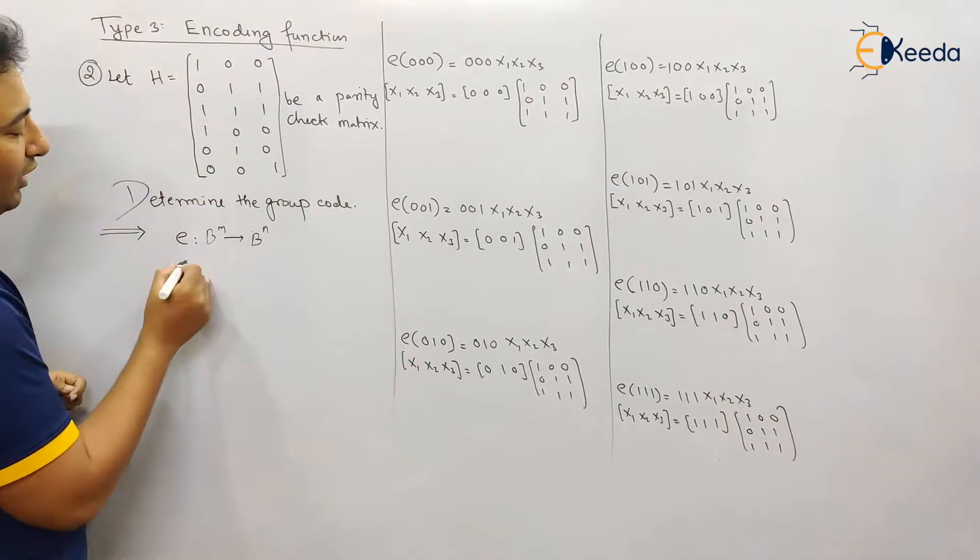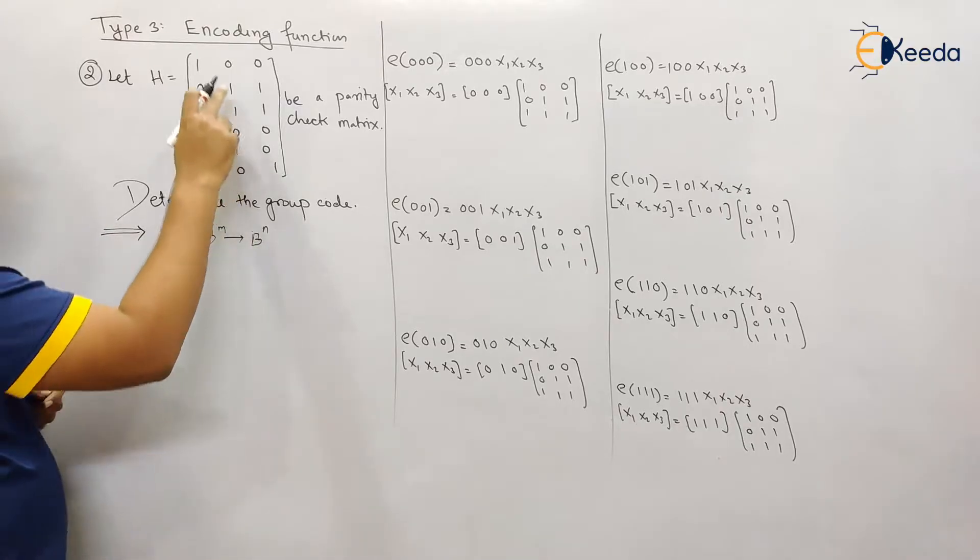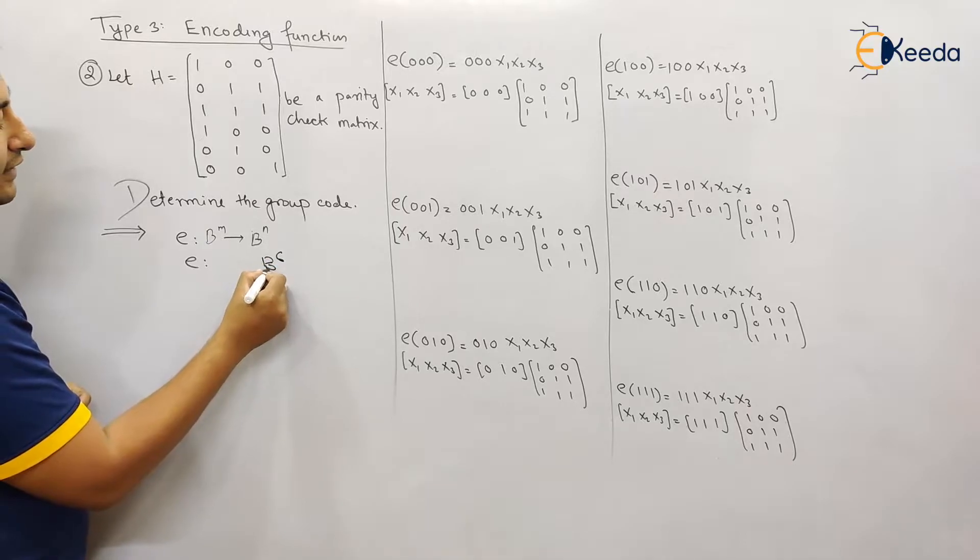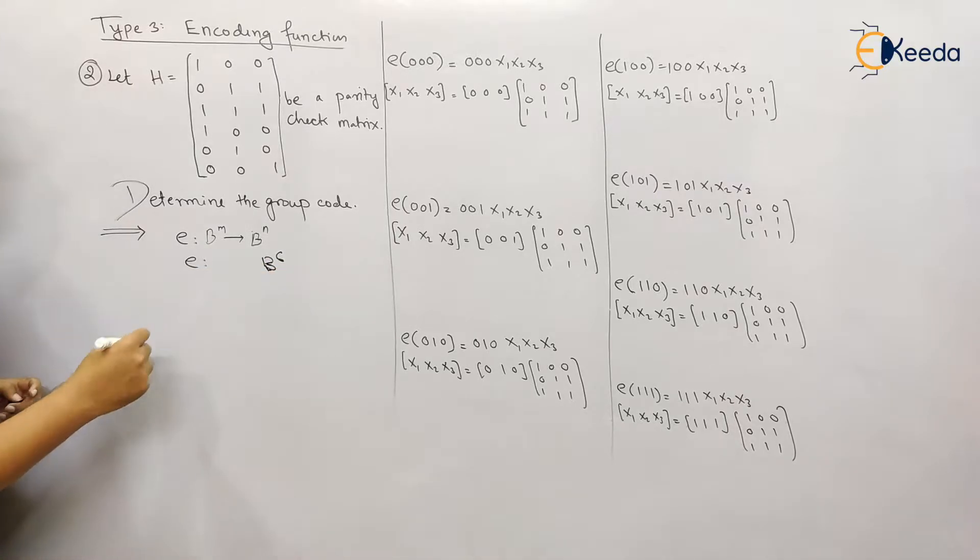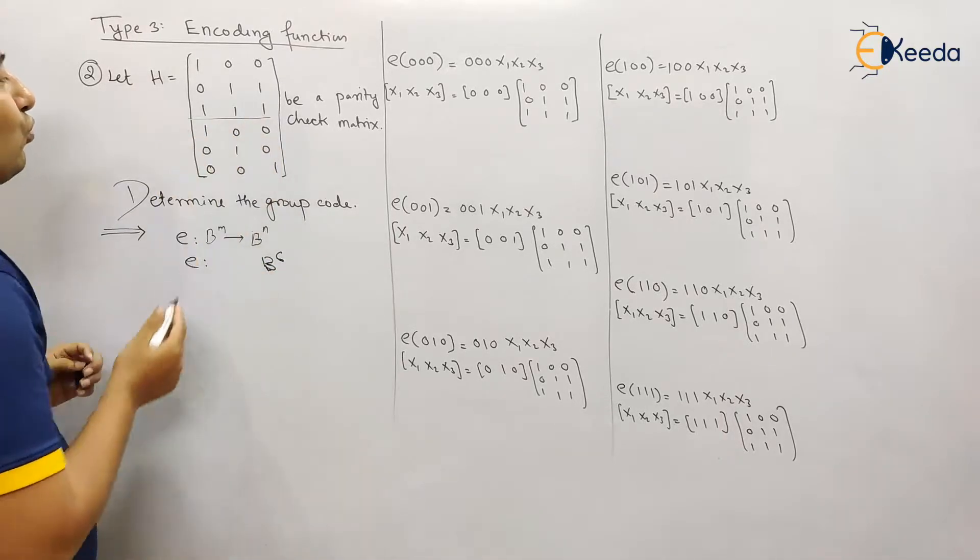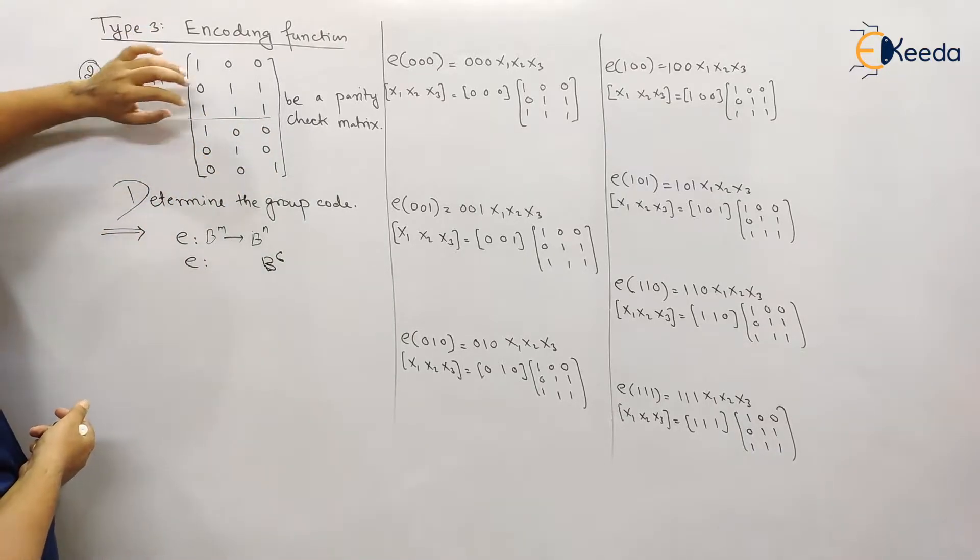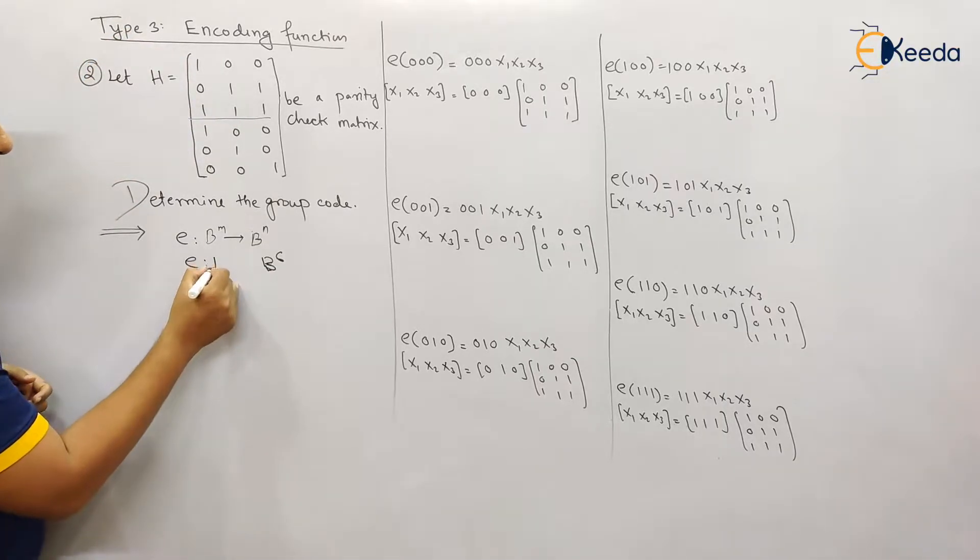So let me check what is m and n. n means total number of rows, so how many rows we have: 1, 2, 3, 4, 5, and 6. So there are 6 rows, so n is 6. And what about m? m means let us separate it into 2. This is our identity matrix of 3 cross 3 on top, non-identity matrix has 3 rows, therefore m is equal to 3.